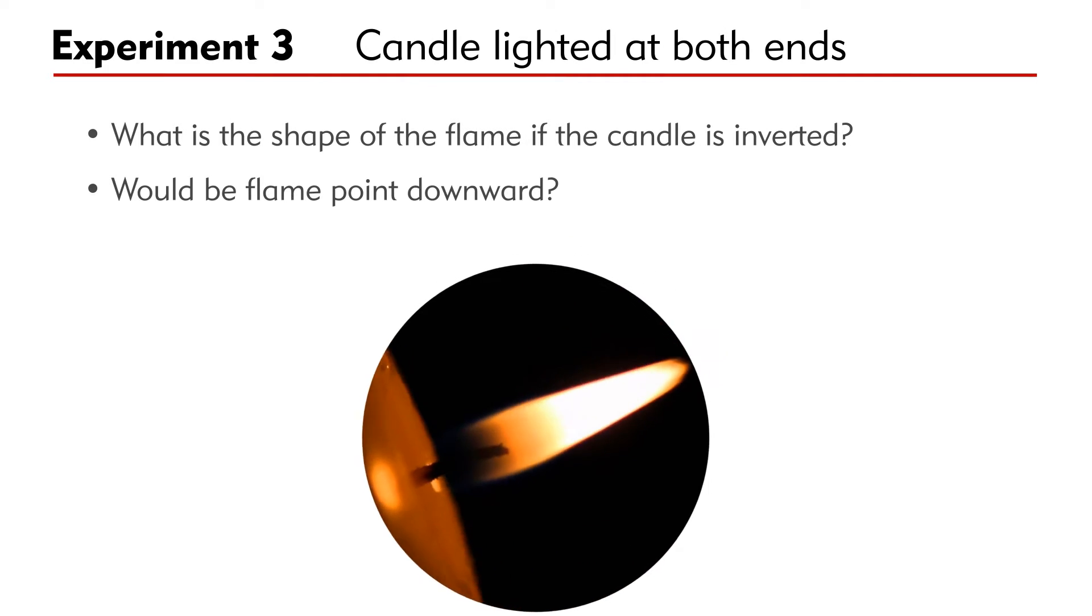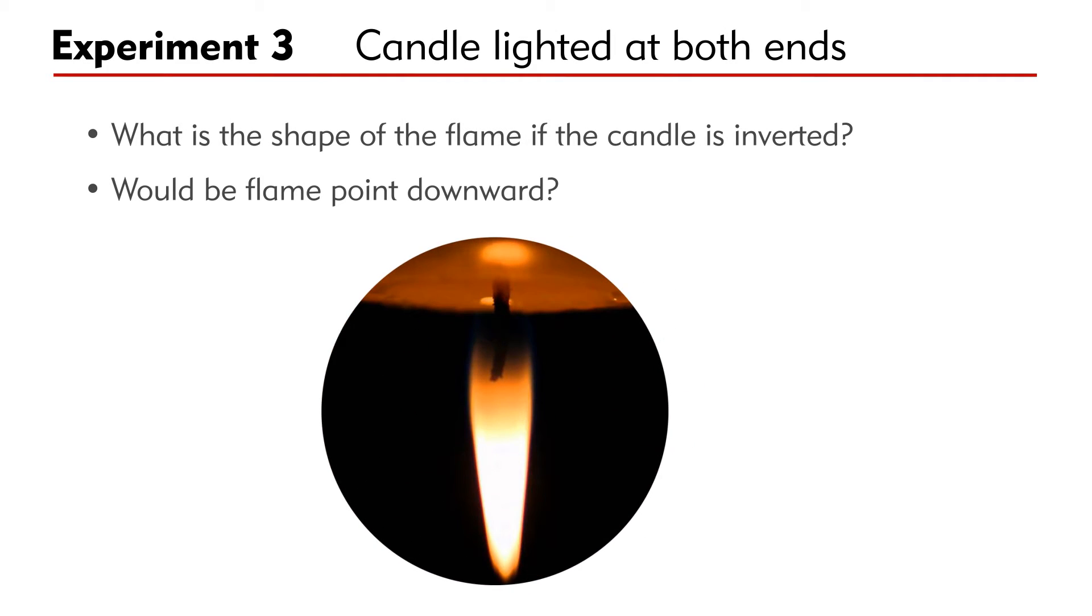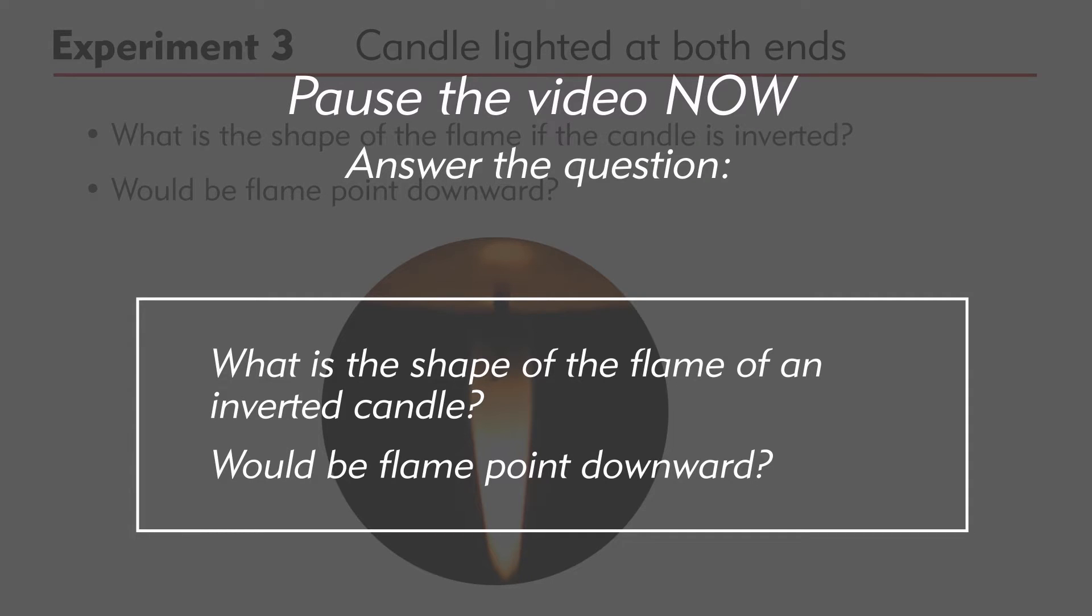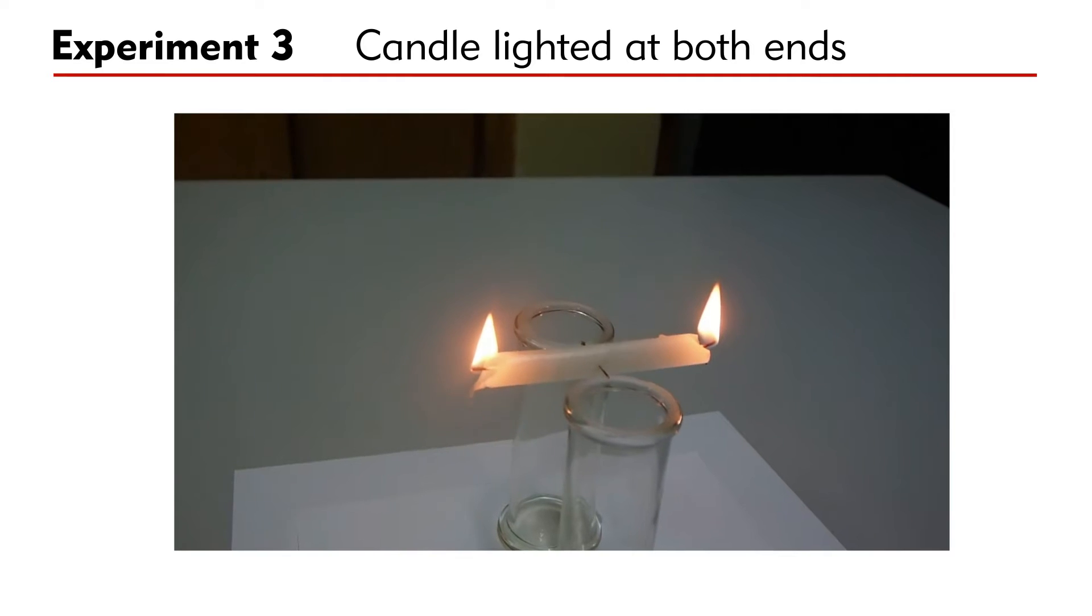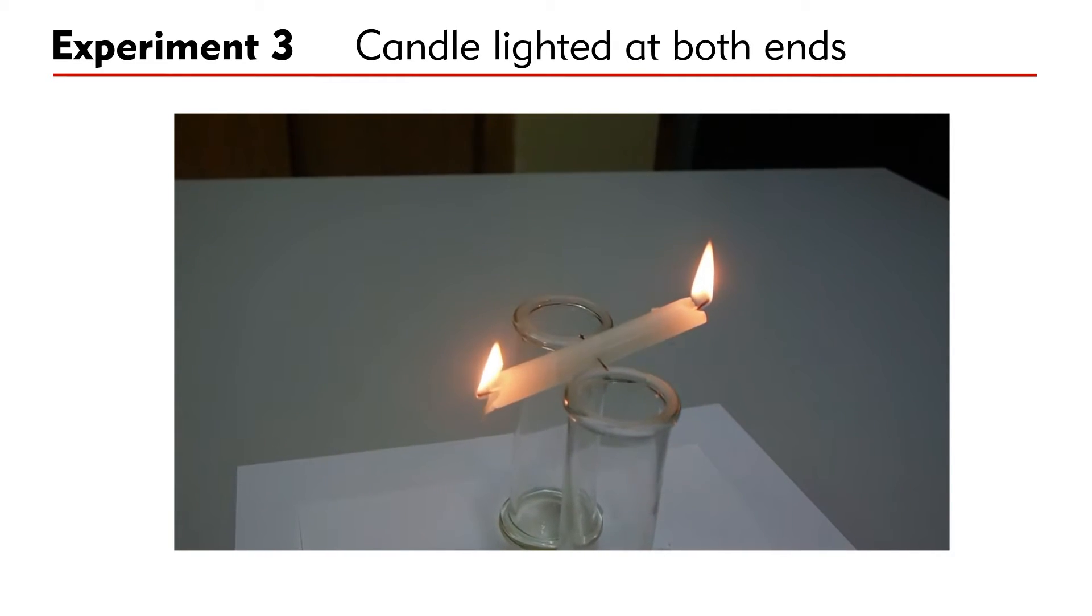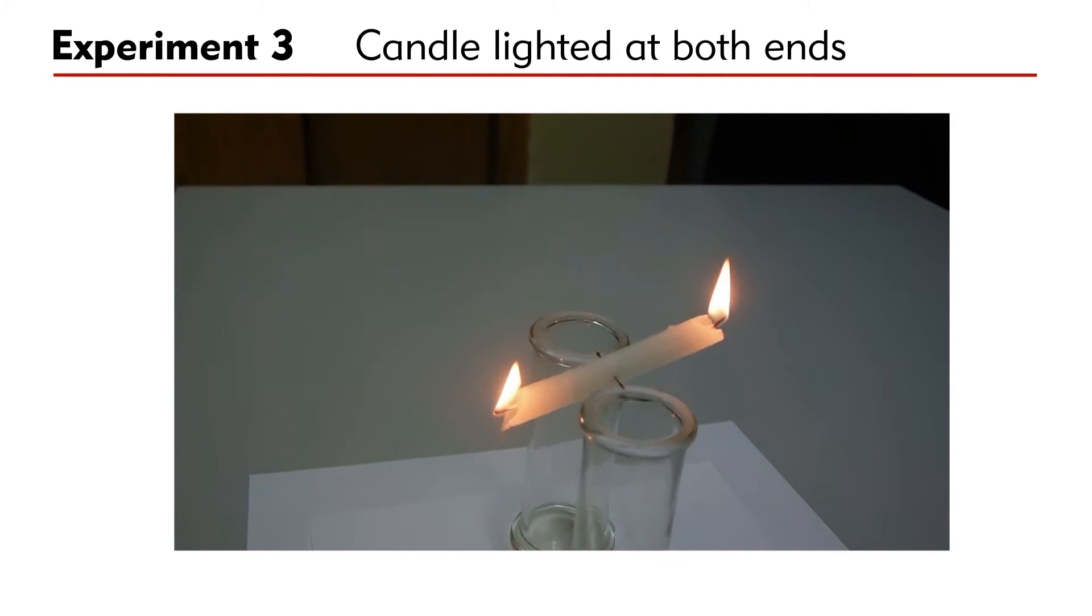What is the shape of the flame if the candle is inverted? Would the flame turn downward? Pause the video for a while and answer the question. In this experiment, both ends of the candle are lighted. Clearly, both flames take the shape of a teardrop. This is because hot air rises.